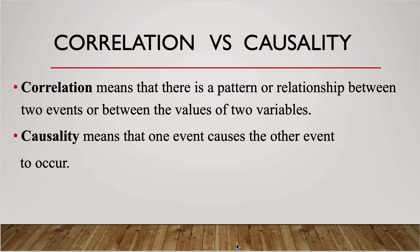We're going to begin this section talking about the difference between correlation and causality. So let's start with just a definition. Correlation means that there is a relationship between two events — the two events are related in some way. Correlation means that there's a relationship between the variables or the values.